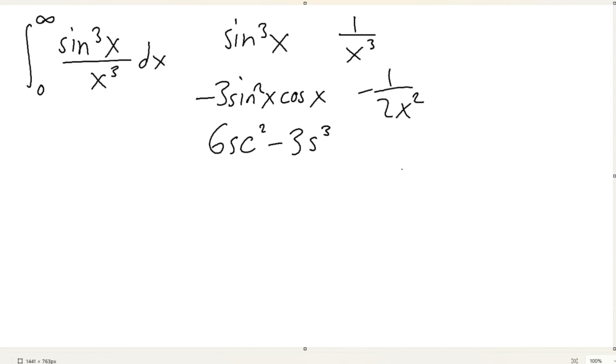We would be doing integration by parts with sine cubed and 1 over x cubed. So now, what we have is this would give us negative 3 sine squared cosine x times negative 1 over 2x squared. Let's just kind of gain some balls to just do product rule. Let's just dive straight into product rule.